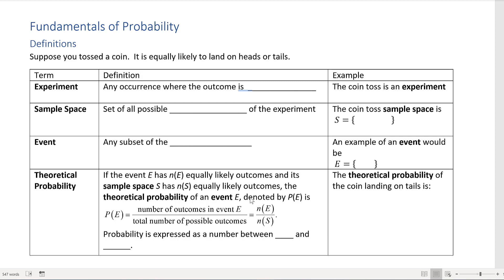The first term is experiment. An experiment is any occurrence where the outcome is uncertain. For example, the toss of a coin - when you toss a coin, you're not sure if it's going to be heads or tails, as long as it's a fair coin.